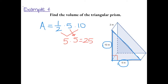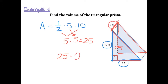So we have 25 for the triangular side. Now we have to multiply the triangular side by the height — the space between the triangle in the front to the triangle in the back — which is 2. So we multiply 25 times 2 to find the volume of the whole prism, which gives us 50 inches cubed.